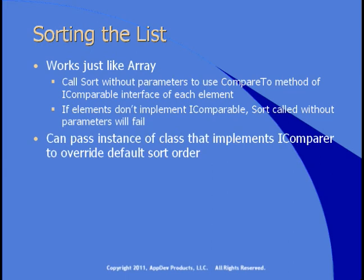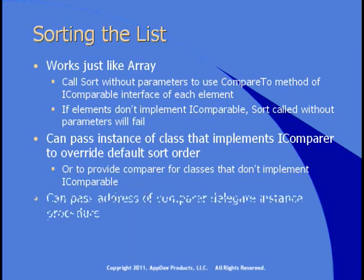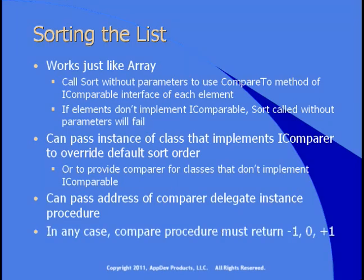You can pass an instance of a class that implements IComparer to override the default sort order or to provide a comparer for classes that don't implement IComparable. You can also pass the address of a comparer delegate instance procedure. In any case, the compare procedure has to return minus one, zero, or plus one.